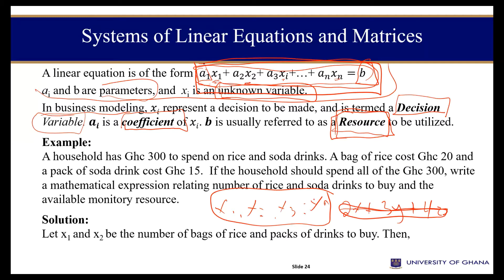Let's read the question clearly. A household has 300 cedis to spend on rice and soda drinks. A bag of rice costs 20 Ghana cedis and a pack of soda costs 15 cedis. If the household should spend all 300 cedis, you are asked to write a mathematical expression relating the number of bags of rice and the number of packs of soda to buy.